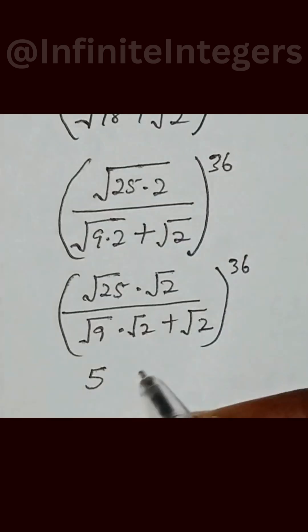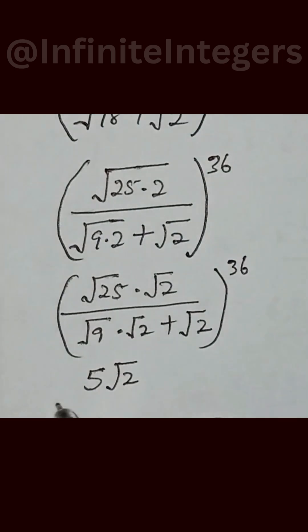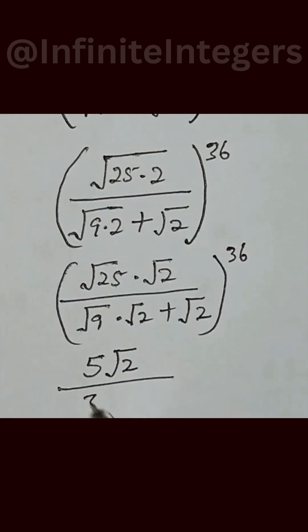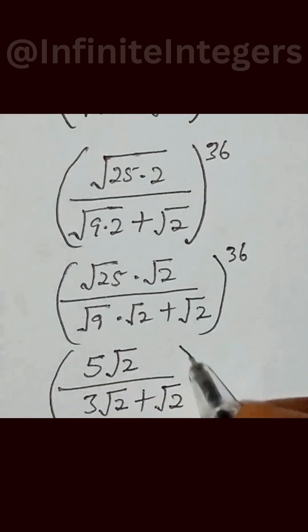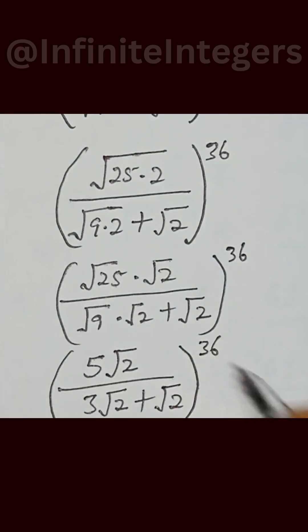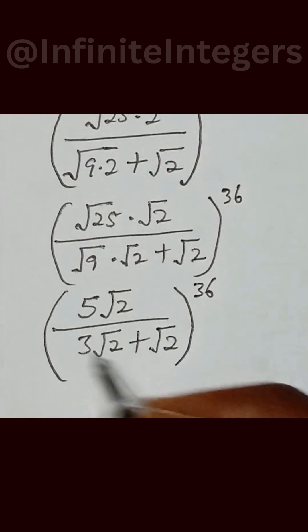Square root of 25 gives us 5 square root of 2 over square root of 9 equals to 3 square root of 2 plus square root of 2 into bracket to the power of 36.